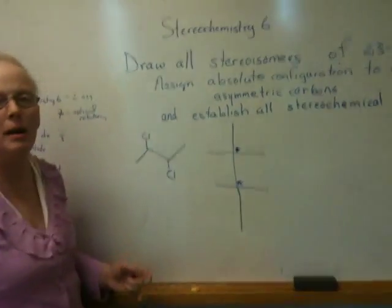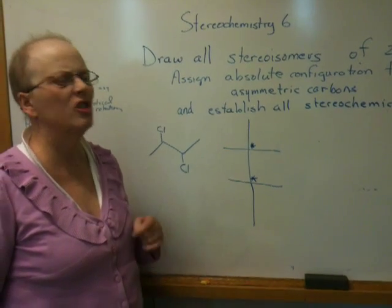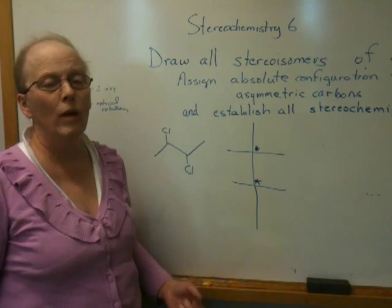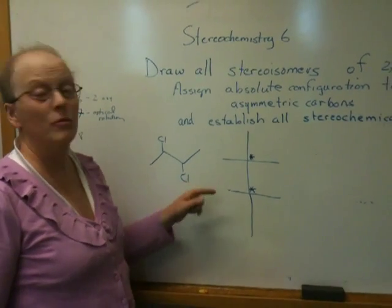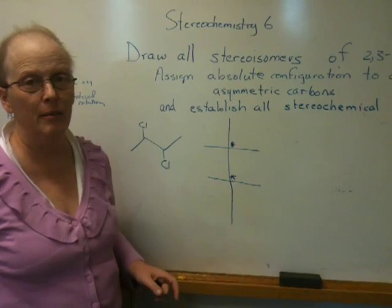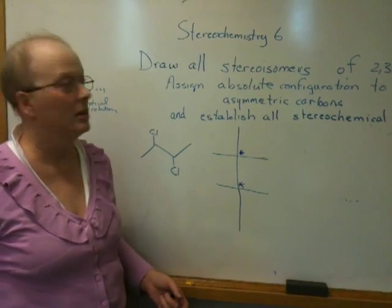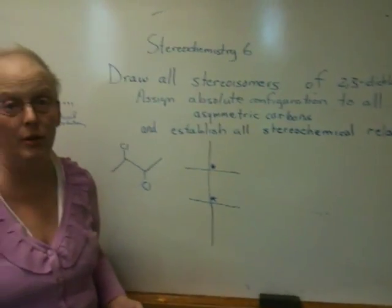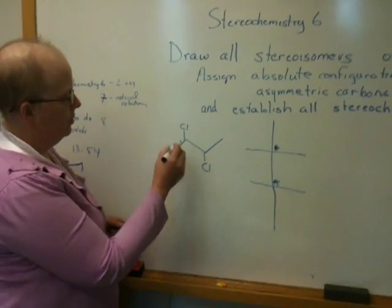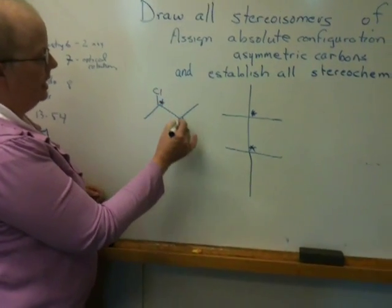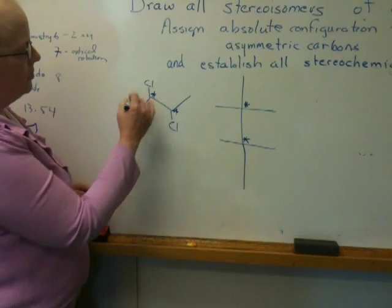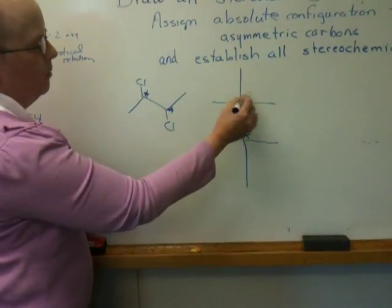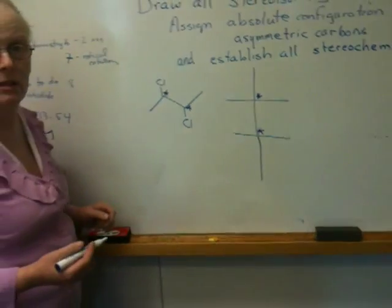Now to start this problem, you really don't have to put a lot of thought into it — you should just slap it down. I'm a big advocate of writing first and doing grammar later, and when it comes to doing structures I take exactly the same approach. The problem is to draw all stereoisomers. It does not matter which stereoisomer you write first. What I want to do is represent these two asymmetric carbons — all I have to do is draw the atoms around each asymmetric carbon.